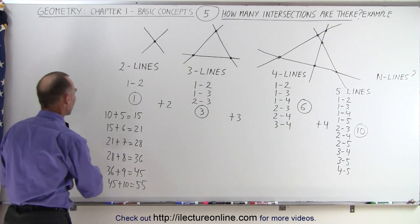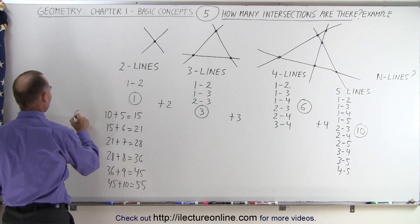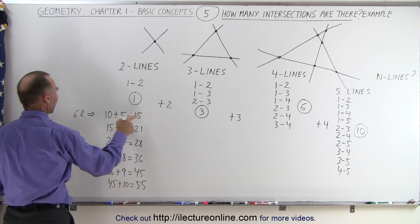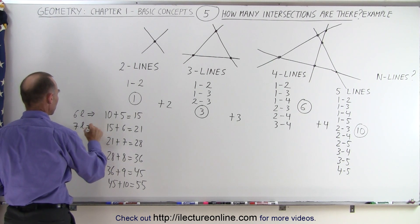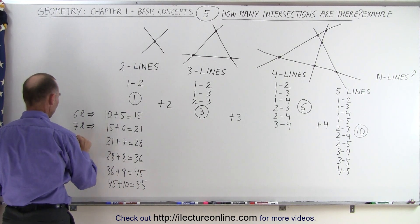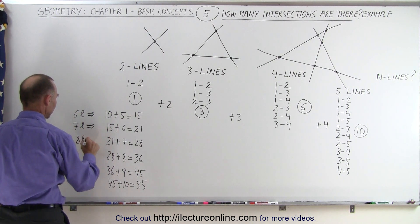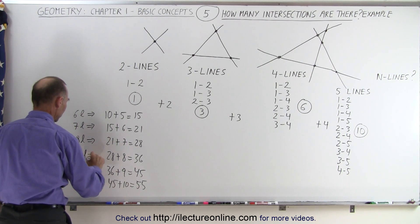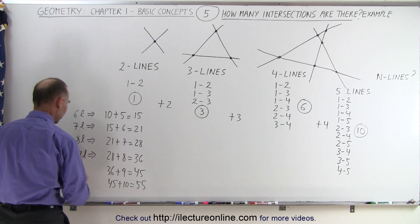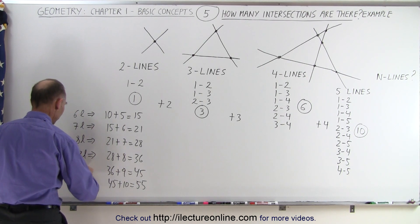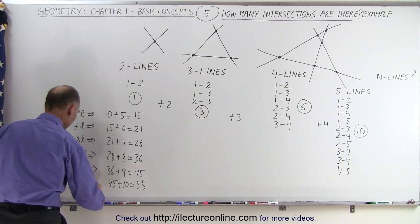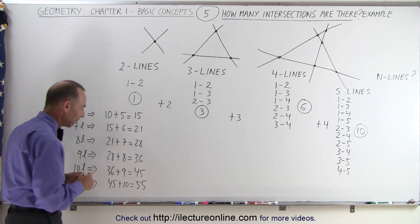So with 6 lines it would be 15, with 7 lines it would be 21, with 8 lines it would be 28, with 9 lines it would be 36, with 10 lines it would be 45, and with 11 lines it would be 55.